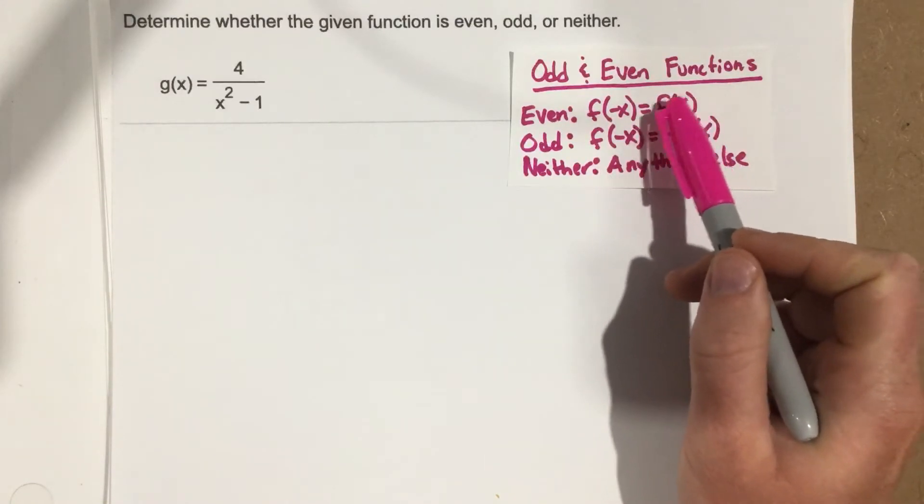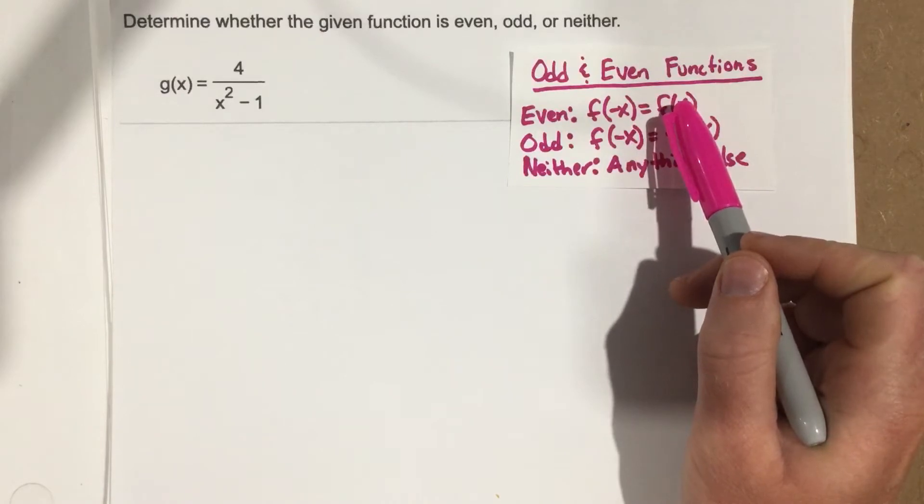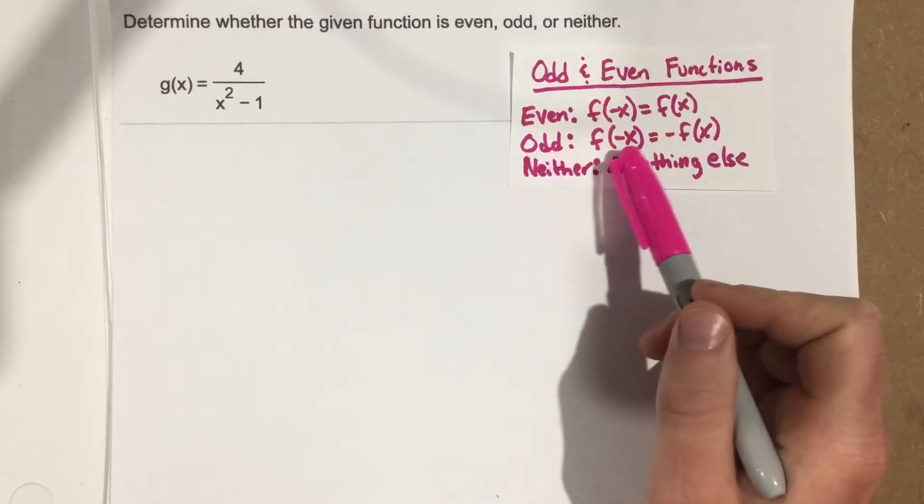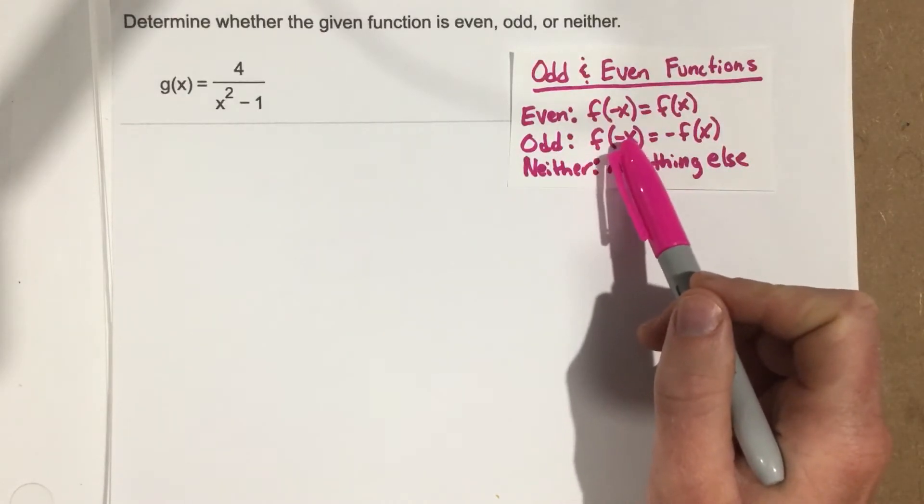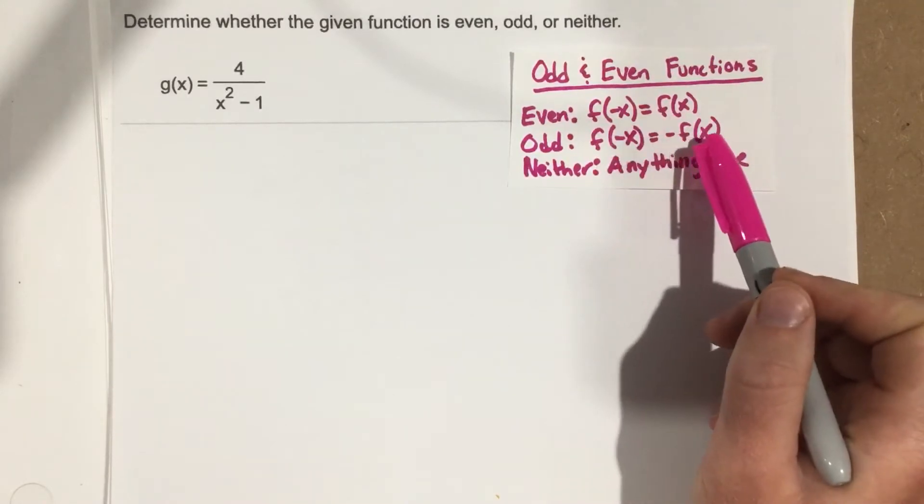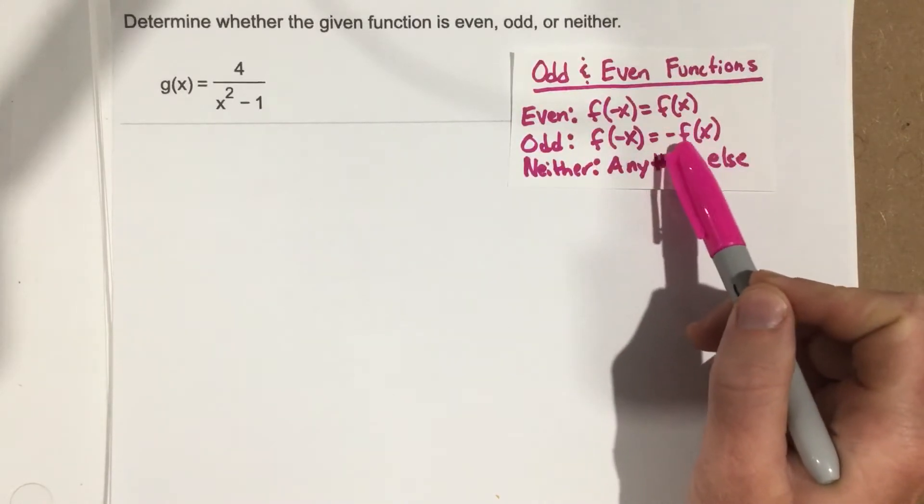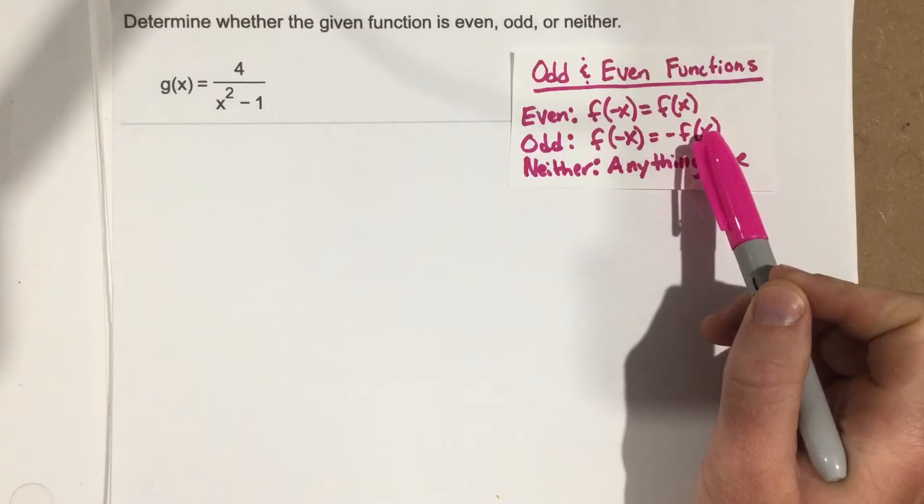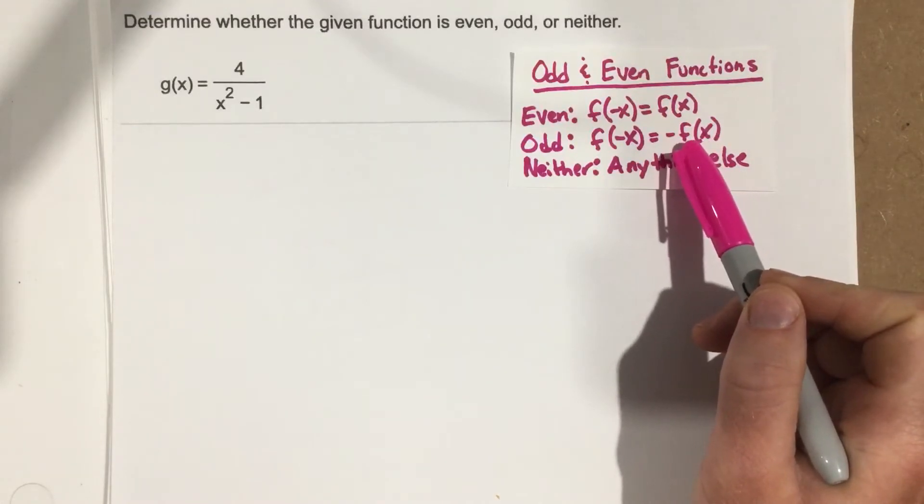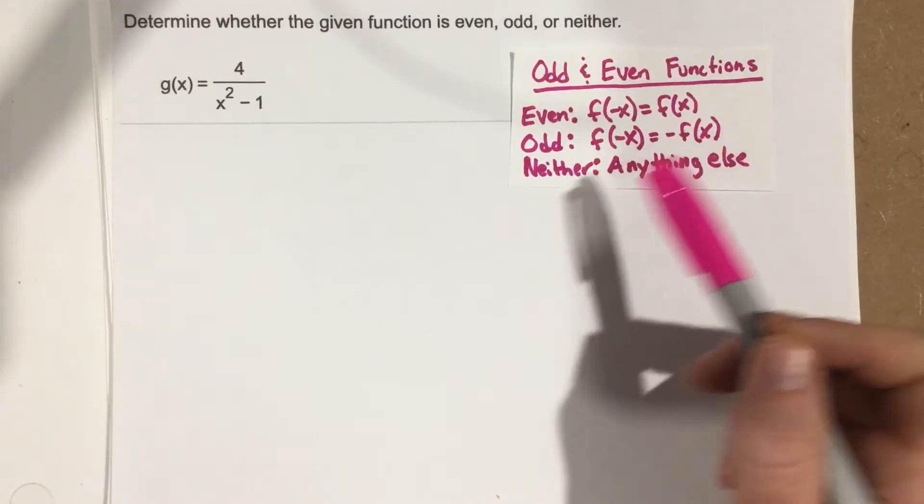and what you get out is just the original function. Odd functions occur when you plug in a negative input for x, and you end up changing that entire function to the opposite signs. So the whole function essentially becomes negated. Each sign changes.